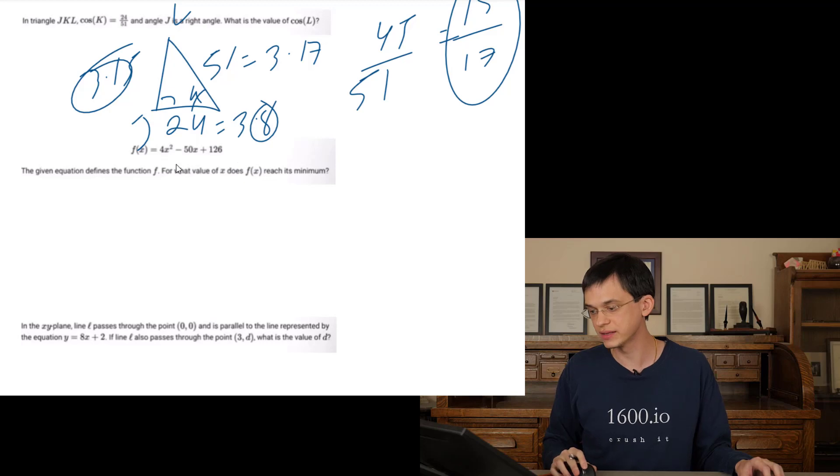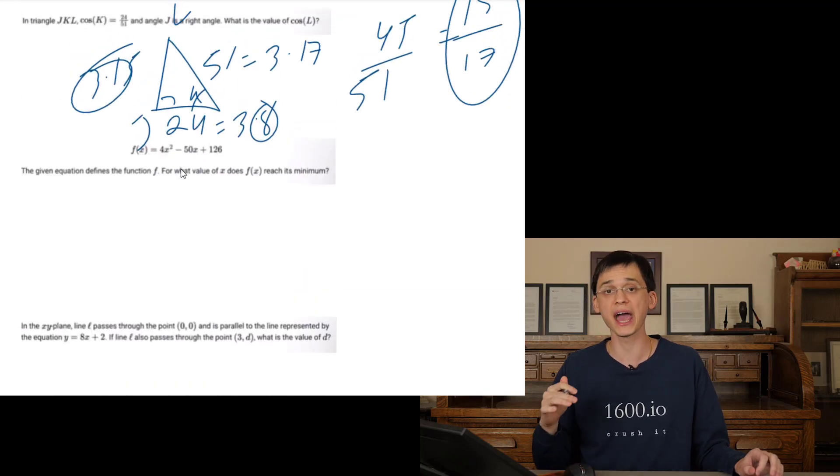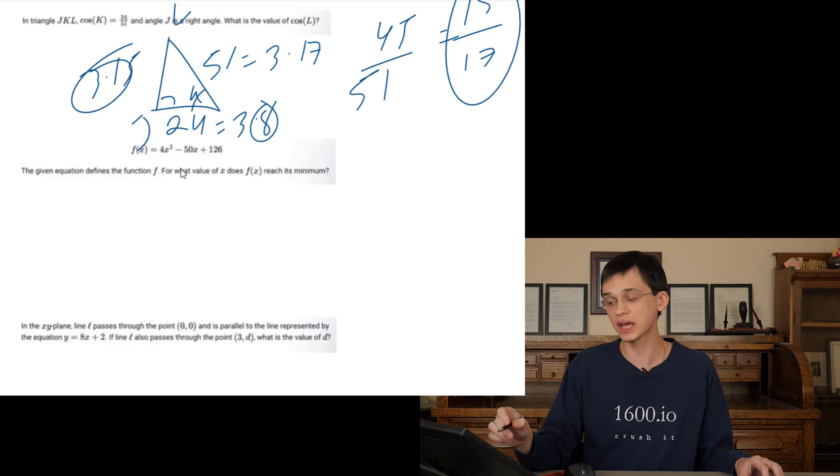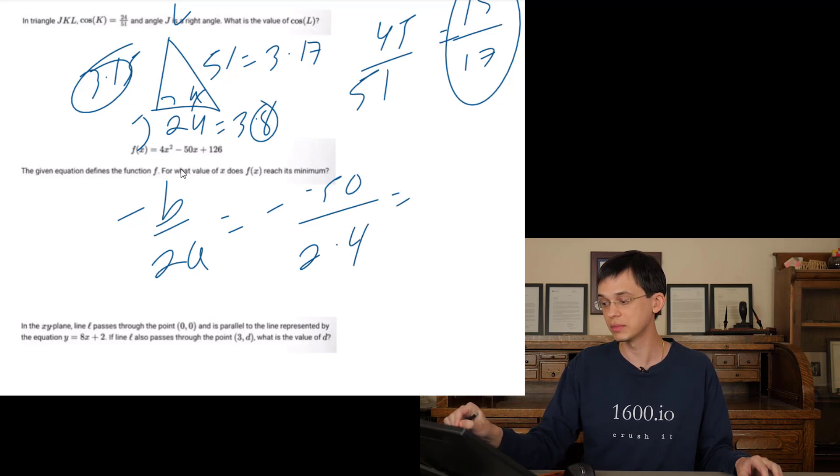The given equation defines this. For what value of X does F of X reach its minimum? So we need to define the X value of the vertex here. The X value of the vertex is given by negative B over 2A in a parabola. That's going to be equal to negative, negative 50 over 2 times 4. So that's going to be equal to positive 50 over 8 or 25 over 4.